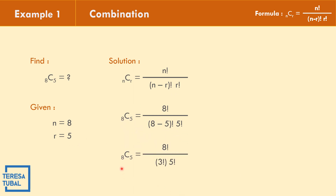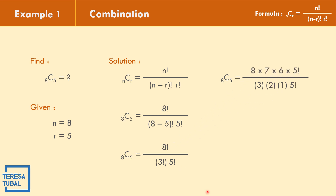The combination of 8 objects taken 5 at a time equals 8 factorial over 3 factorial times 5 factorial. We expand 8 factorial as 8 times 7 times 6 times 5 factorial to cancel the 5 factorial in the denominator. The factored form of 3 factorial is 3 times 2 times 1, and 5 factorial is retained in both numerator and denominator.